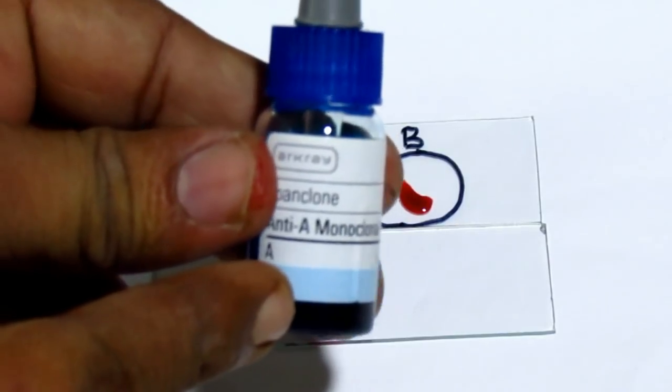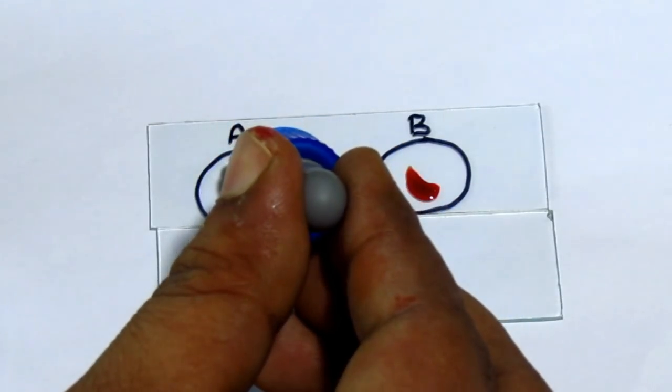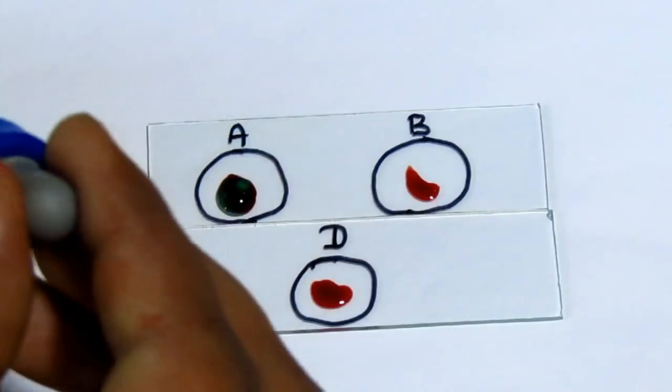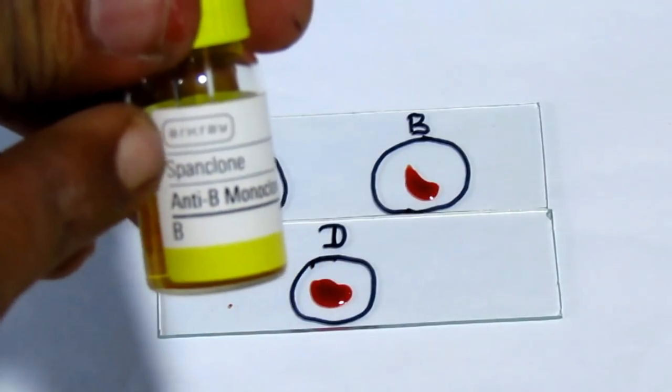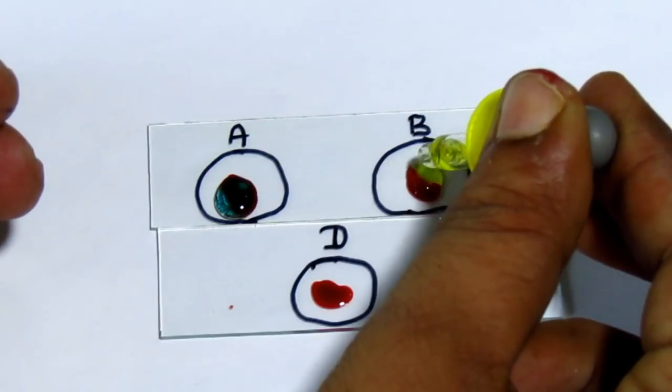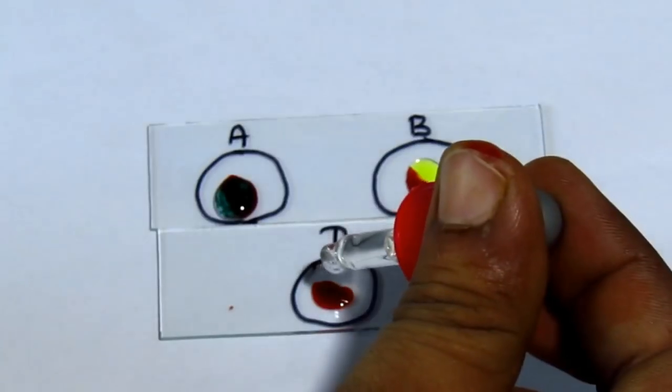Then put one drop of anti-sera A to A blood drop, anti-sera B to B blood drop, and anti-sera D to D blood drop.